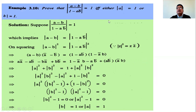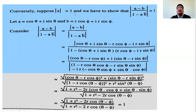Conversely (Part 2): assume |a| = 1 (or |b| = 1) and prove |(a - b)/(1 - ab̄)| = 1. Since |a| = 1, write a in polar form as a = cosθ + i·sinθ. Any complex number b in polar form is b = r(cosφ + i·sinφ).